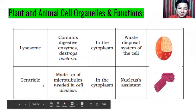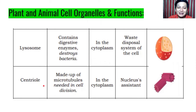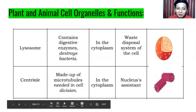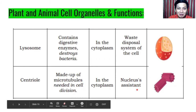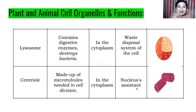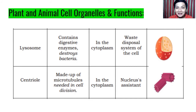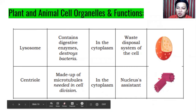Then we have centrioles. Centrioles are made up of microtubules needed in cell division. They are located in the cytoplasm and are the nucleus's assistant for cell division. Remember, cells can be divided — and centrioles are very important for that process.